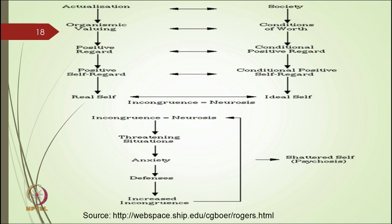For normal behavior, there is congruence — a match between real self and ideal self. In some cases there is incongruence — a mismatch between real self and ideal self. For example, a student has the capacity to achieve 60% marks, but the societal message is one should get 80%. This discrepancy means his real self is at 60% while the ideal self says 80%, and this incongruence is the cause of neurosis.